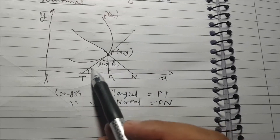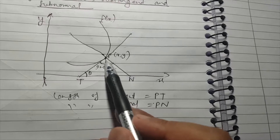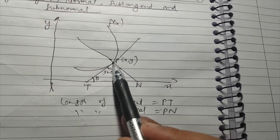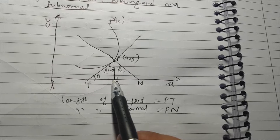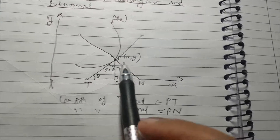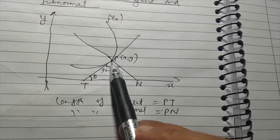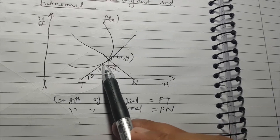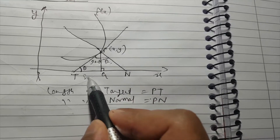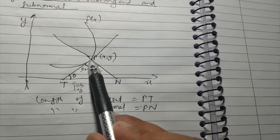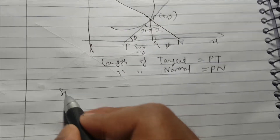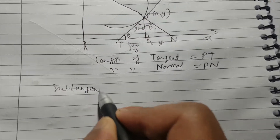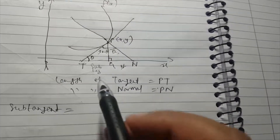Now, what remains are sub-tangent and sub-normal. If you go perpendicularly from point P down to the x-axis you reach point G. From G to T (where the tangent meets the x-axis) is your sub-tangent, GT. And from G to N (where the normal meets the x-axis) is your sub-normal, GN.